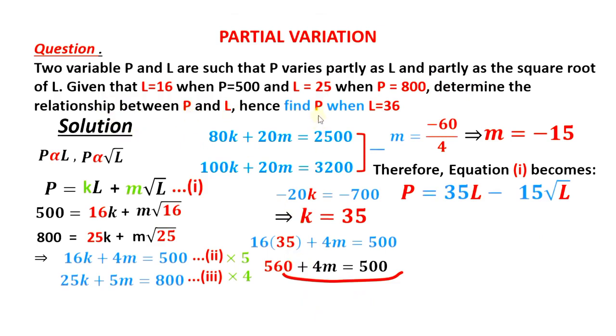And then lastly, we are going to find P when L is 36. So using this equation, when L is 36, so we say P is equal to 35 times L, and L is 36, minus 15 root L. L again is 36.